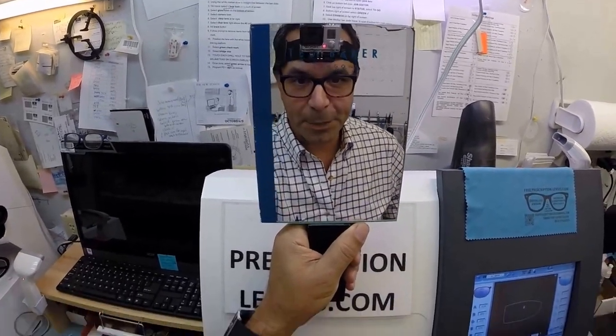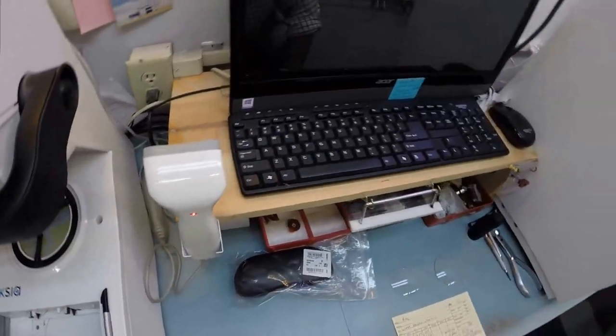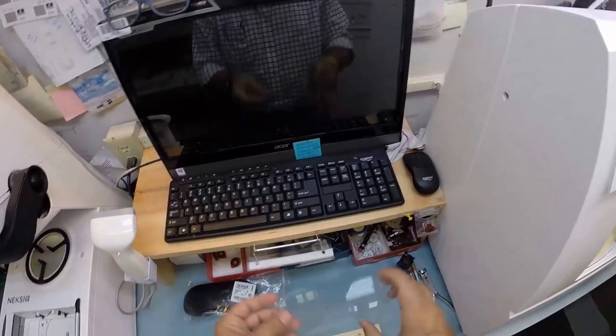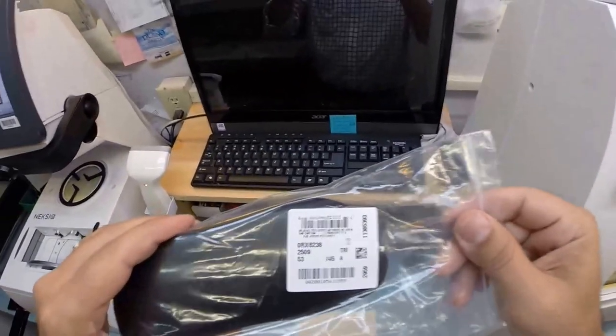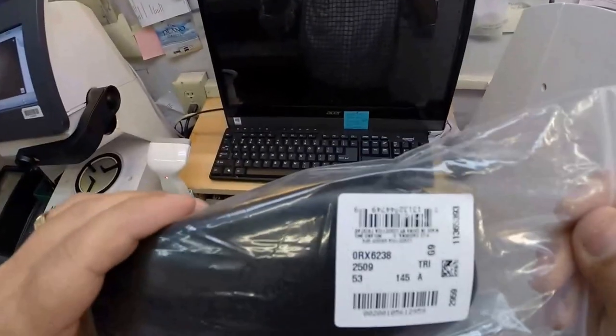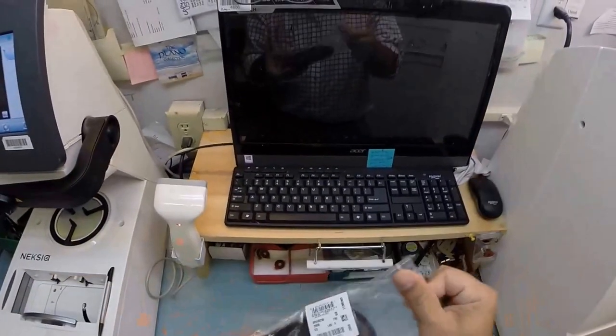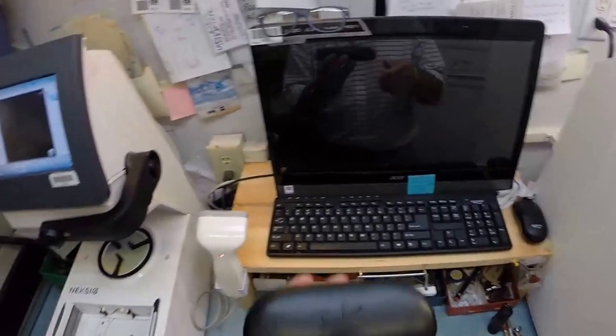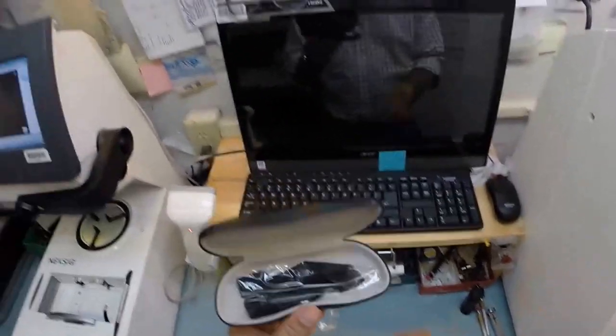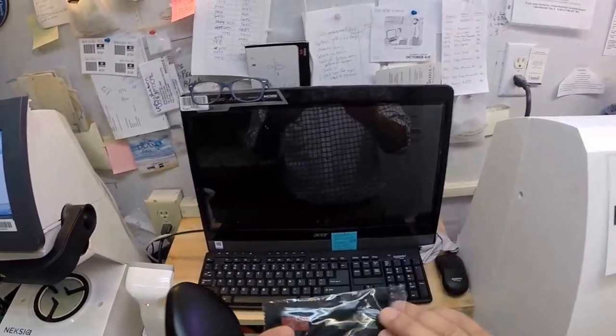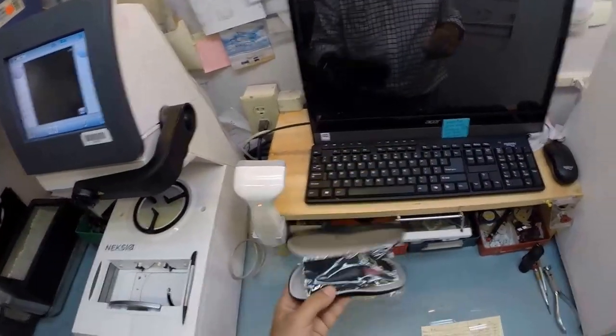Hello Roy in West Haven, Utah. Matthew here with FreePrescriptionLenses.com. Tonight I'm going to be showing you how I cut progressive invisible bifocal lenses for your Ray-Ban 6238 color 2509, which is the shiny black in the 53 eye size. Now let's get on to the show.